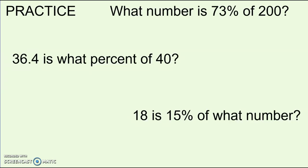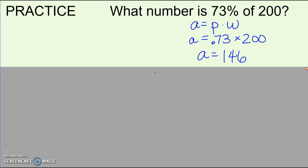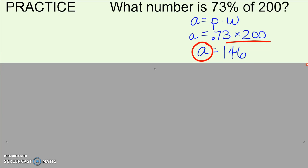Here's one of each type for practice. Every time, please write down the equation first, then plug in the A, the P, or the W, whichever two you know, and then solve for what's missing. Pause, and then we'll check. The first one I was solving for A. A is already by itself, so I just did this math and got 146. So 146 is 73% of 200.